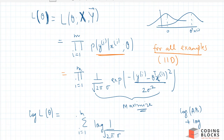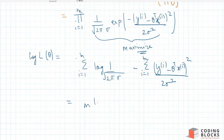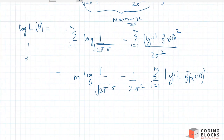Simplifying, the log-likelihood becomes: m·log(1 over root(2π·σ)) minus (1 over 2 sigma squared) times the summation from i equals 1 to m of (yi minus theta transpose xi) squared. This function is written as ll(theta), the log-likelihood.